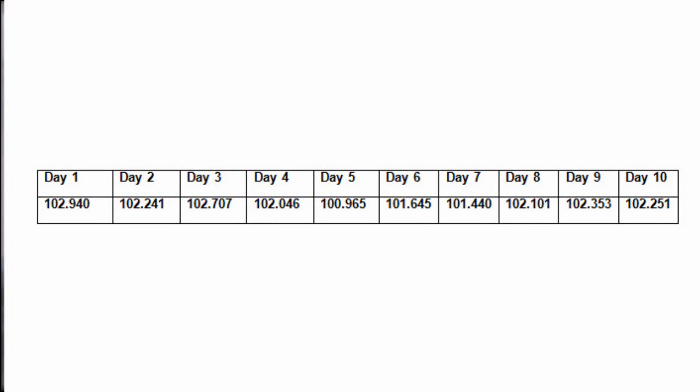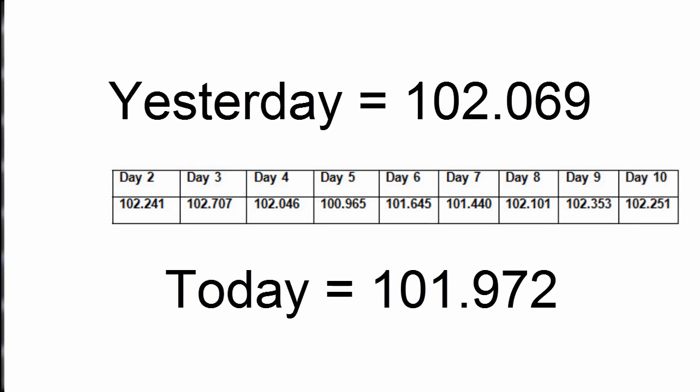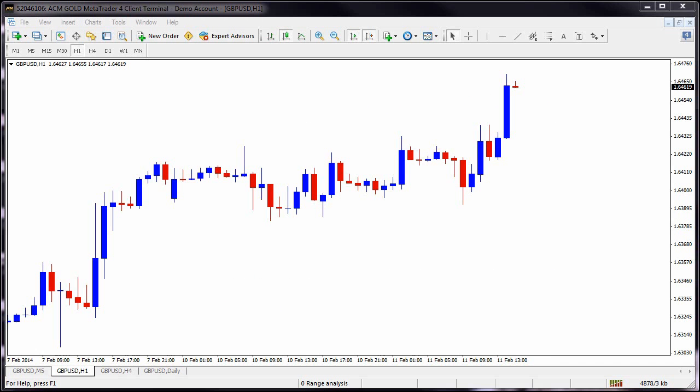Assume the following are the closing prices for the last 10 days of trading for the US dollar Japanese yen. The calculation for yesterday's 9-day simple moving average would be day 1's price all the way through to day 9's price, divided by 9, giving us our answer. To calculate today's 9-day simple moving average, all we have to do is drop off day 1 and use day 10 for our calculation to give us our answer.